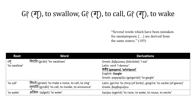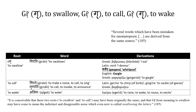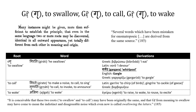Mueller writes: it is conceivable that these two roots — to swallow and to call — may have been originally the same. Grh, from meaning to swallow, may have come to mean the indistinct and disagreeable noise which even now is called swallowing the letters, or what we now say, swallowing one's words. Many instances might be given, more than sufficient to establish the principle, that even in the same language, two or more roots may be discovered, identical in all outward appearance, yet totally different from each other in meaning and origin.